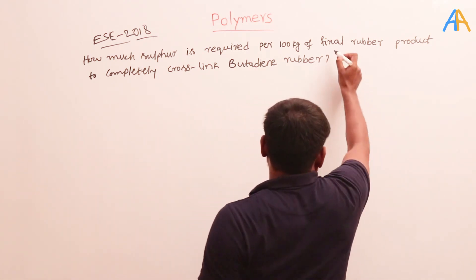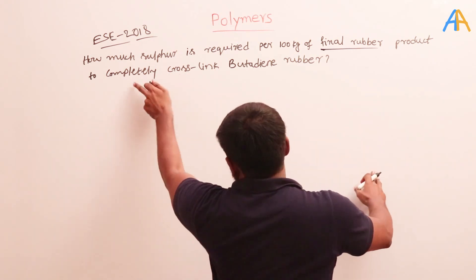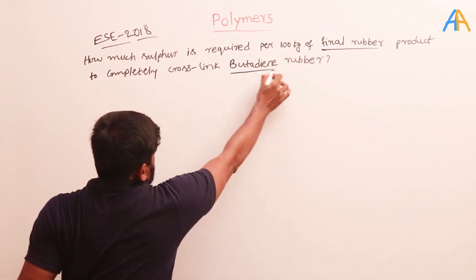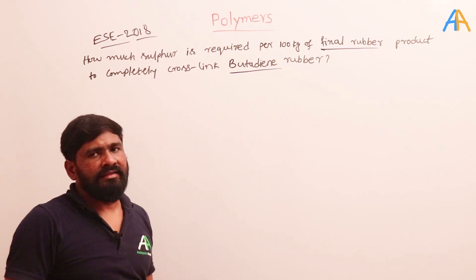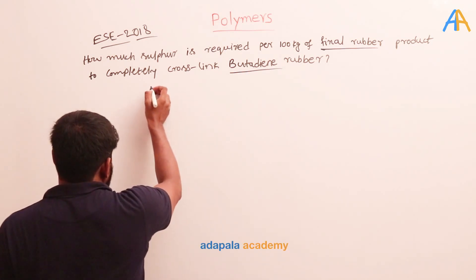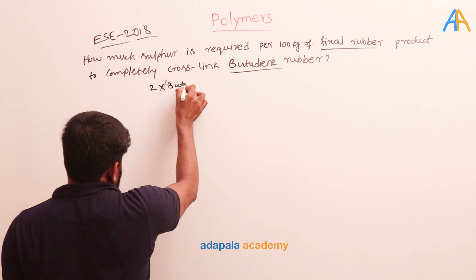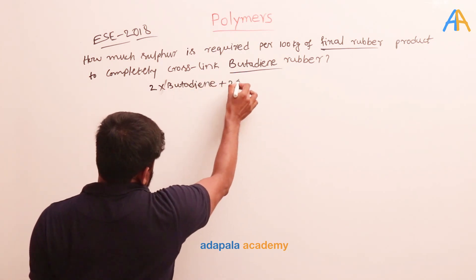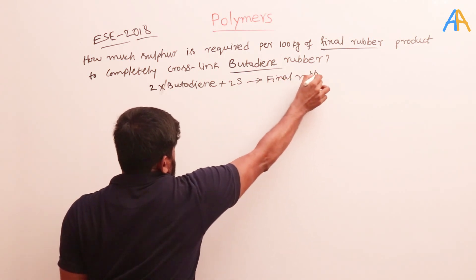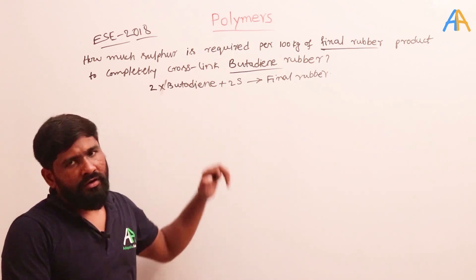One thing you need to remember: this is a final product they are talking about — the final rubber product. To completely cross-link the butadiene rubber, here we take butadiene rubber and using vulcanization we form the final product. In vulcanization, we need two monomers of butadiene plus two sulfur atoms, and then it forms the final rubber. If you don't know this, you cannot solve the problem.